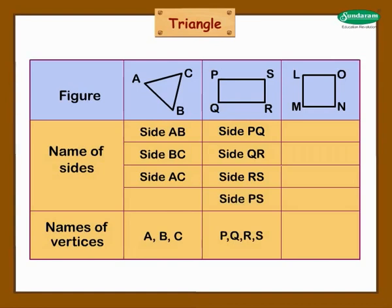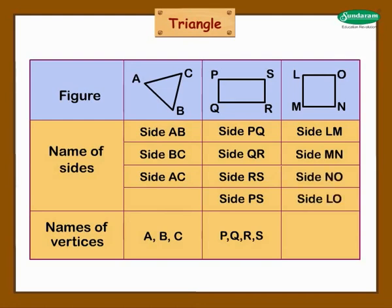Now look at the square LMNO. The sides are side LM, side MN, and side NO. The vertices are L, M, N, and O.